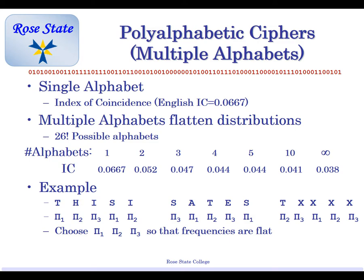With a single alphabet, the index of coincidence was 0.667. That's based on about 1972 writing, because nowadays our writing is so different.